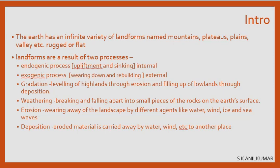Erosion is the wearing away of the landscape by different agents like water, wind, ice, and sea. For example, in a coastal village, sea waves over time take away the soil, the village shrinks, and the sea advances inland. This can happen on river banks too. Water, wind, ice, and sea all have the capability to erode and wear away the landscape.